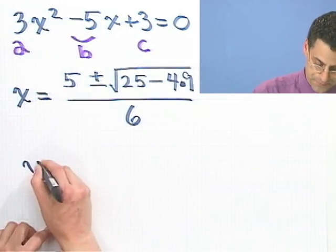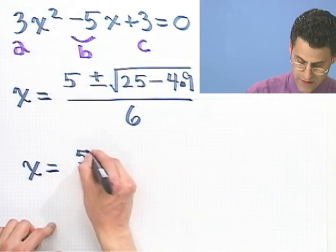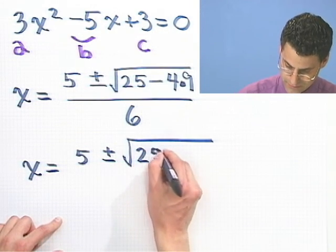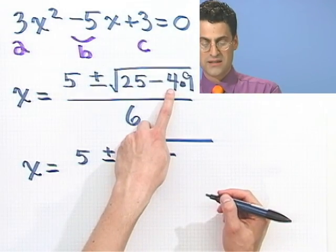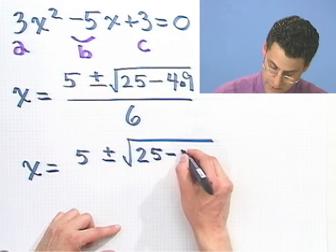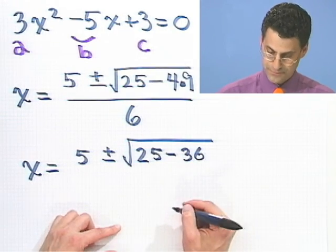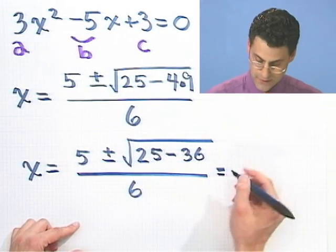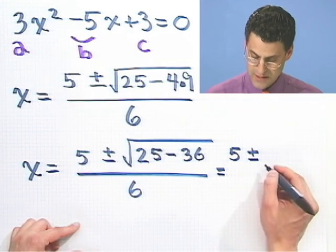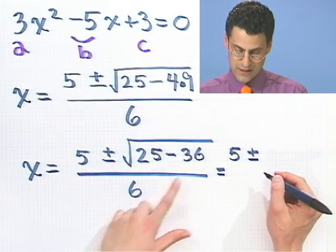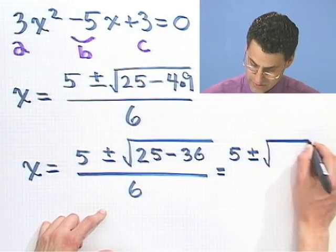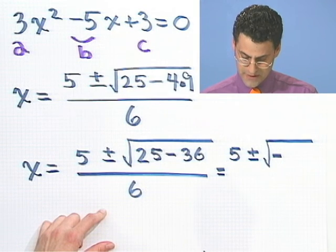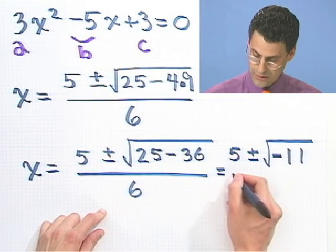Let's work that out. x equals 5 plus or minus the square root of 25 minus — and what is 4 times 9? That is 36 — divided by 6. So what does this equal? 5 plus or minus, and now what's 25 minus 36? That's going to be the square root of a negative number. It's going to be negative 11, all over 6.